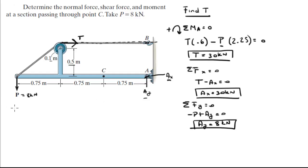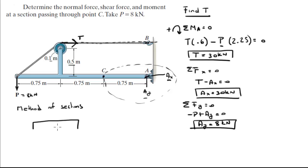Now we're going to use the method of sections to find our shear, moment, and normal. We're going to use this section right here, so let me redraw that section. This is C. The normal is going to the left because we have Ax here, and we have Ay here — so this will be the normal.